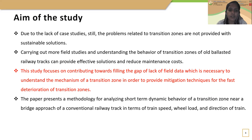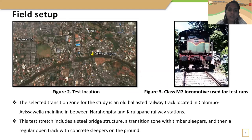This study focuses on contributing towards filling the gap of lack of field data, which is necessary to understand the mechanism of transition zones in order to provide mitigation techniques for the fast deterioration of transition zones. The selected transition zone of this study is located on the Colombo–Avissawella mainline between Narahenpita and Kirillapone railway stations. This is an old ballasted railway track in Sri Lanka. This stretch includes a bridge structure, a transition zone with timber sleepers, and then a regular open track with concrete sleepers on the ground. The figure shows the location of the bridge and the locomotive used for the measurements.